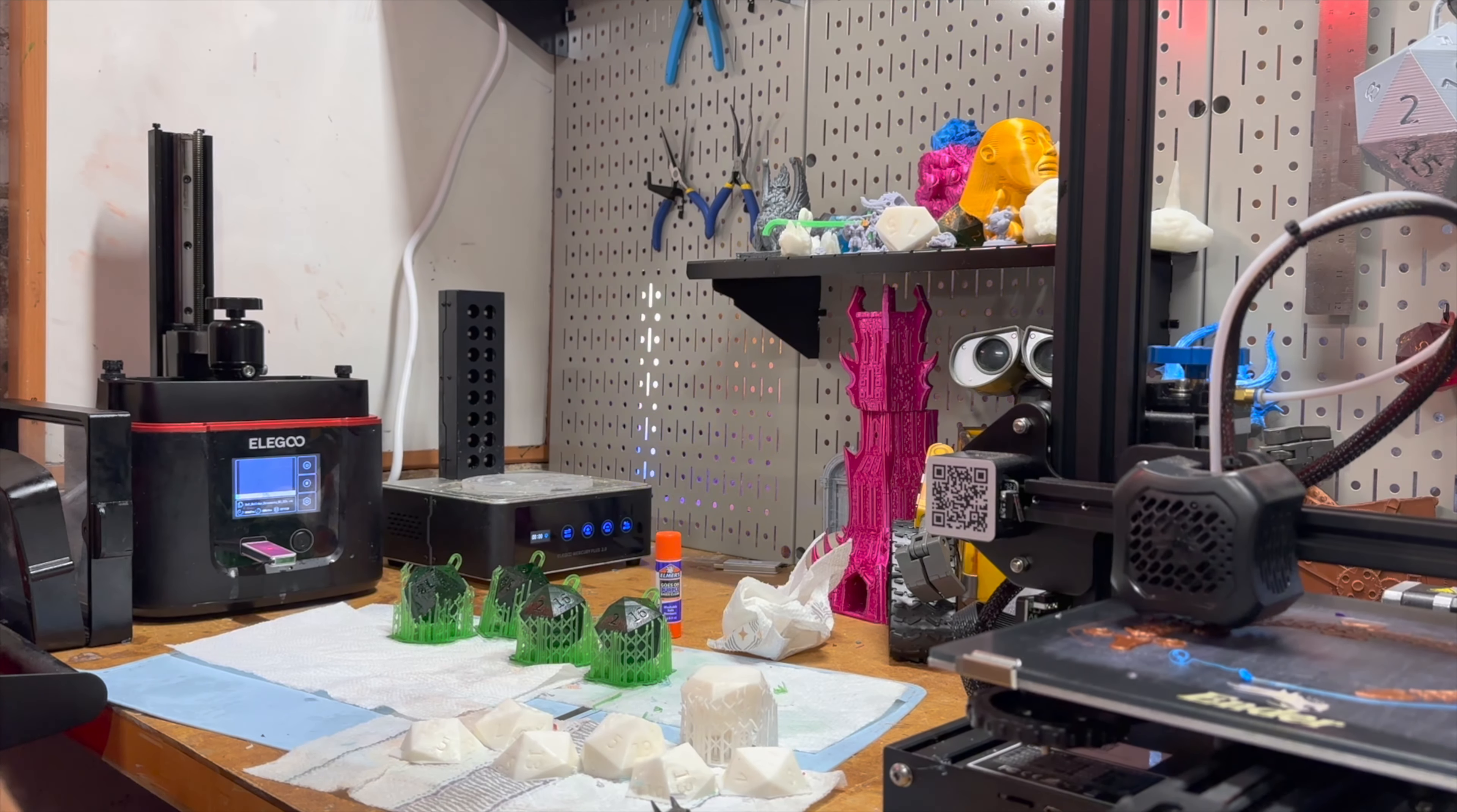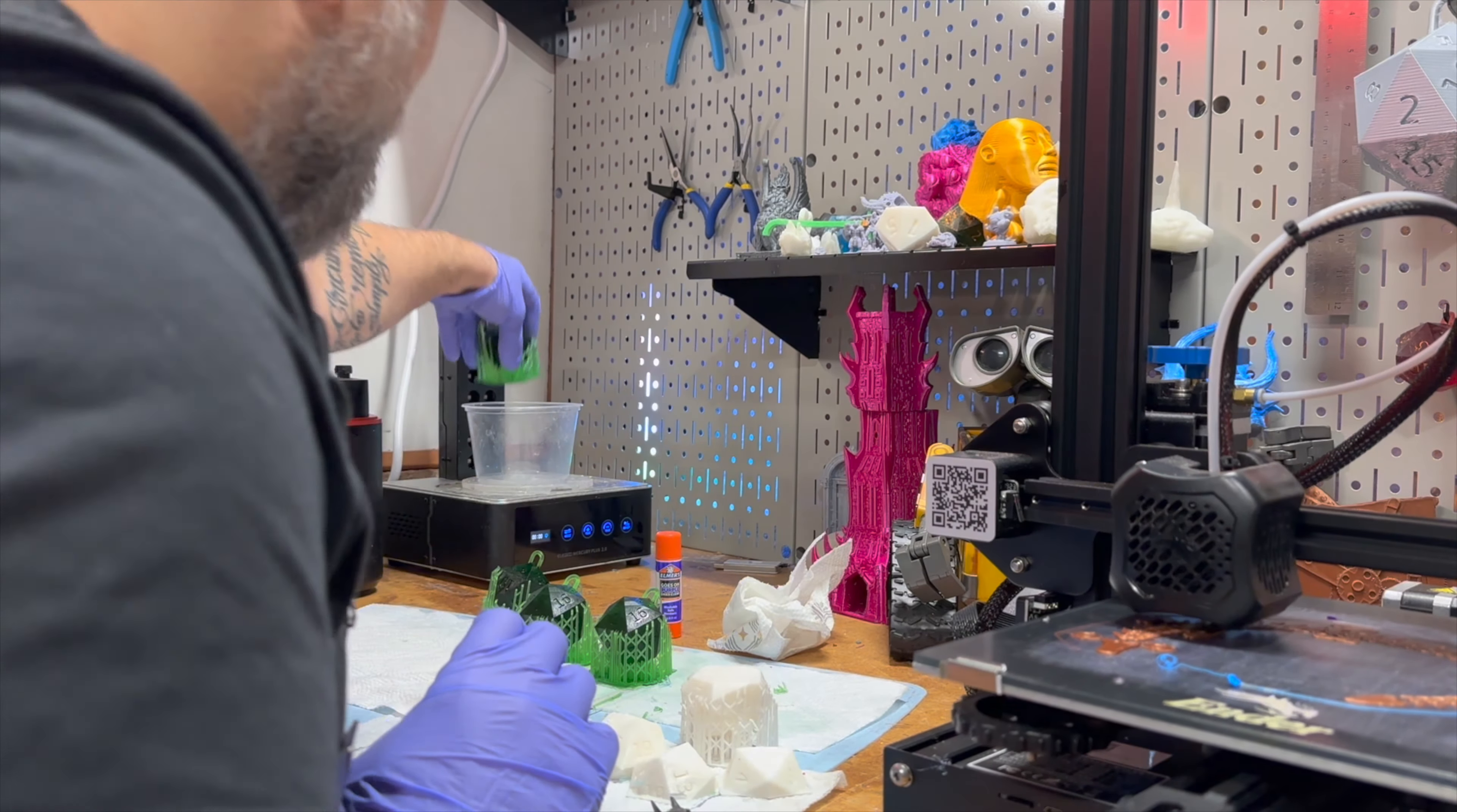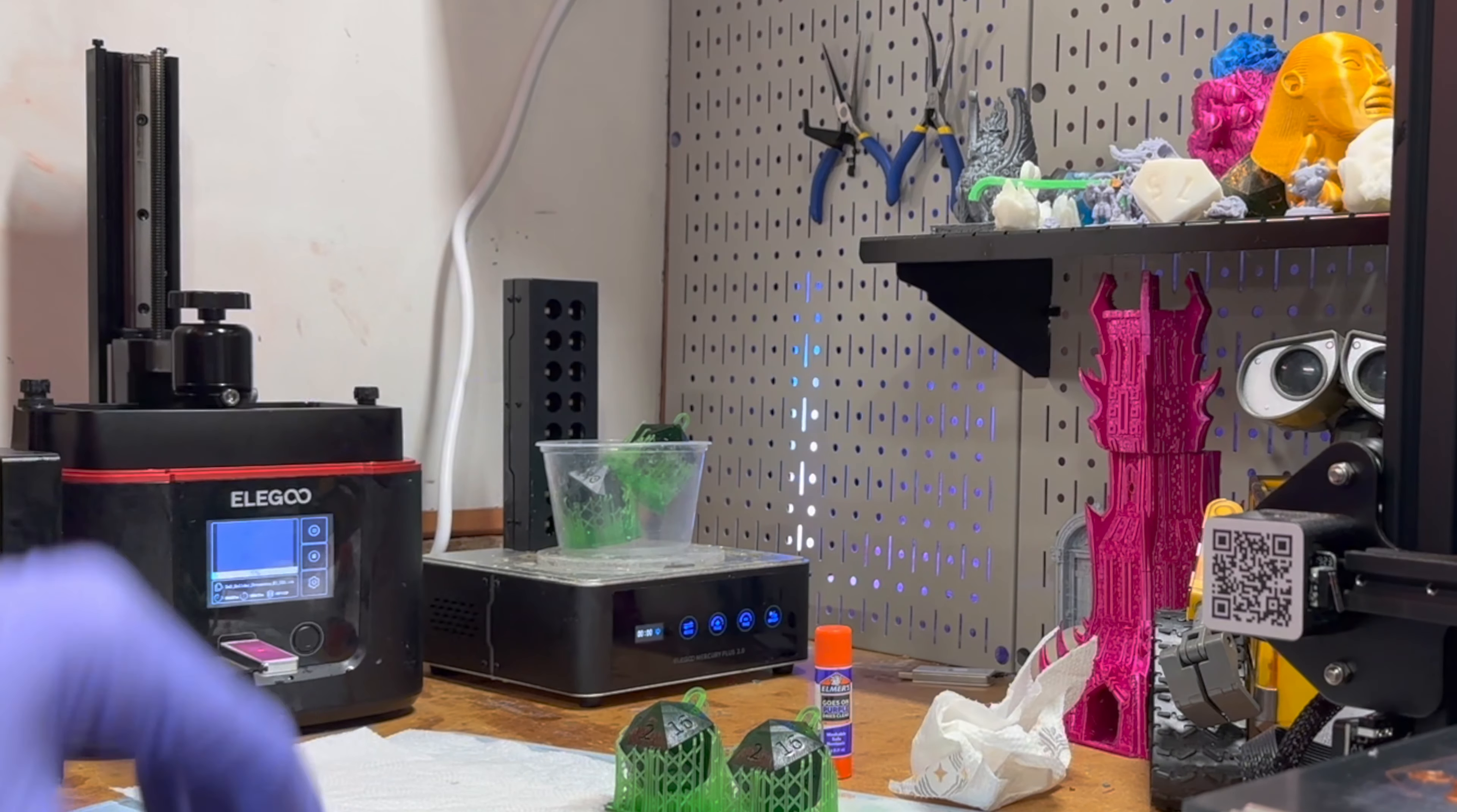So what I started doing is using just a simple container to put on the lazy susan that's inside of the curing station. And then what I do is I just put my model in there. It keeps some of the uncured resin from attaching to it. Now I sort of fit two of these dice in here. So I'm just going to stack them like that.